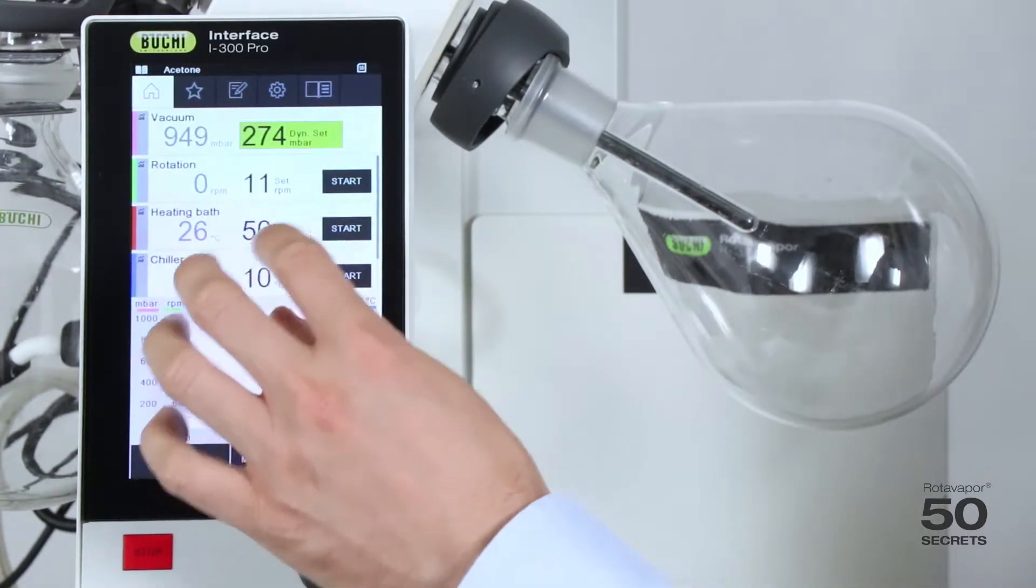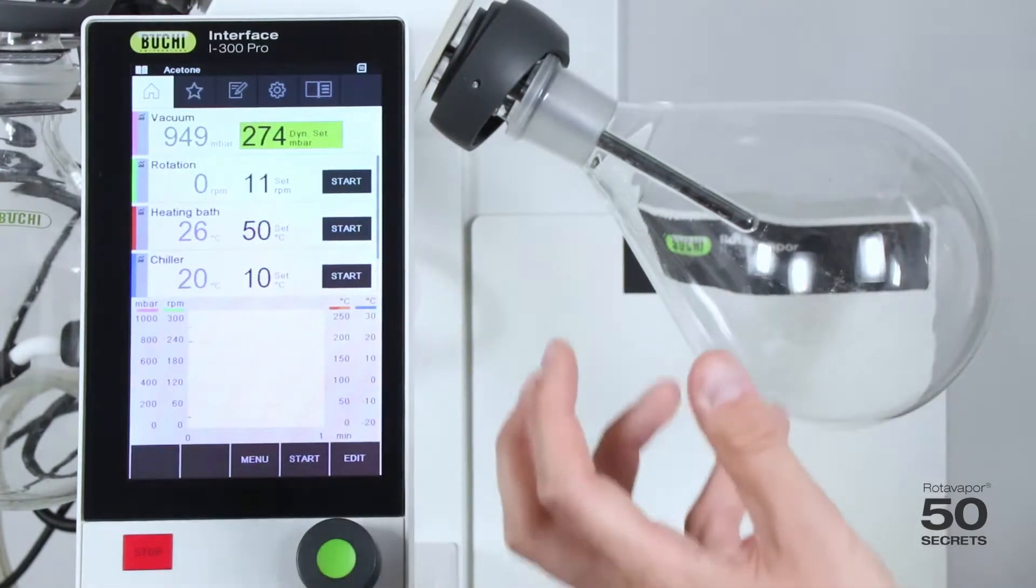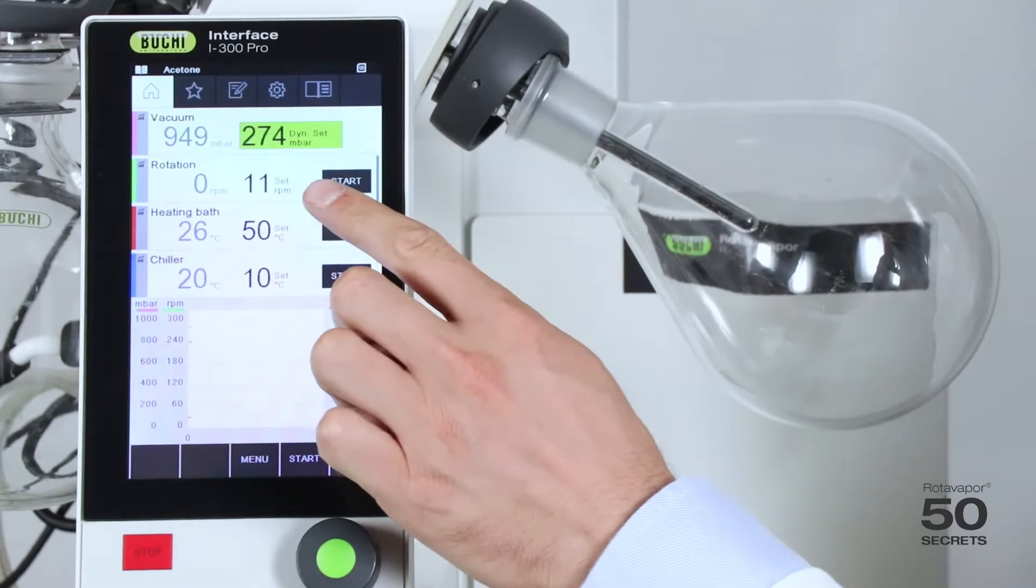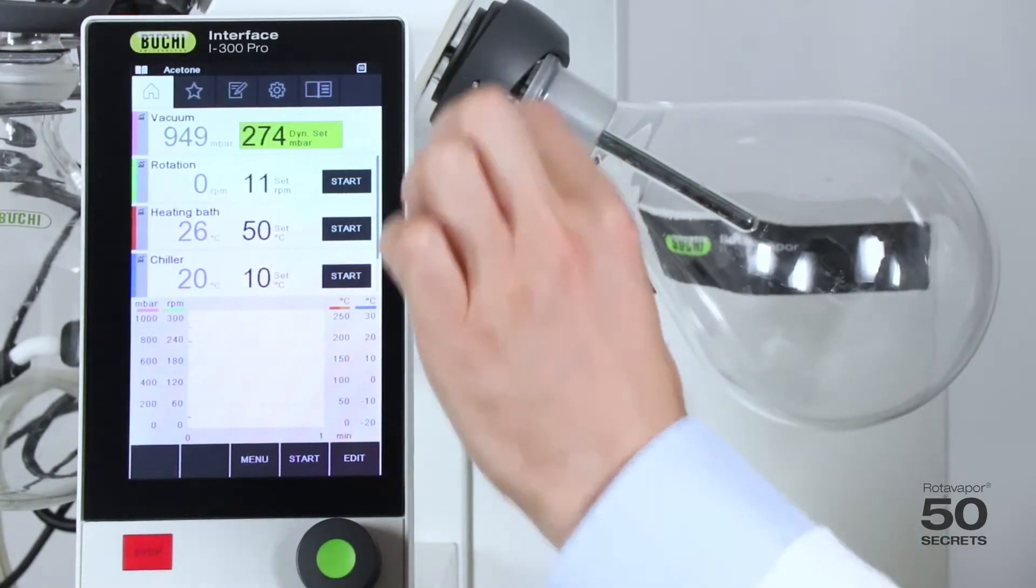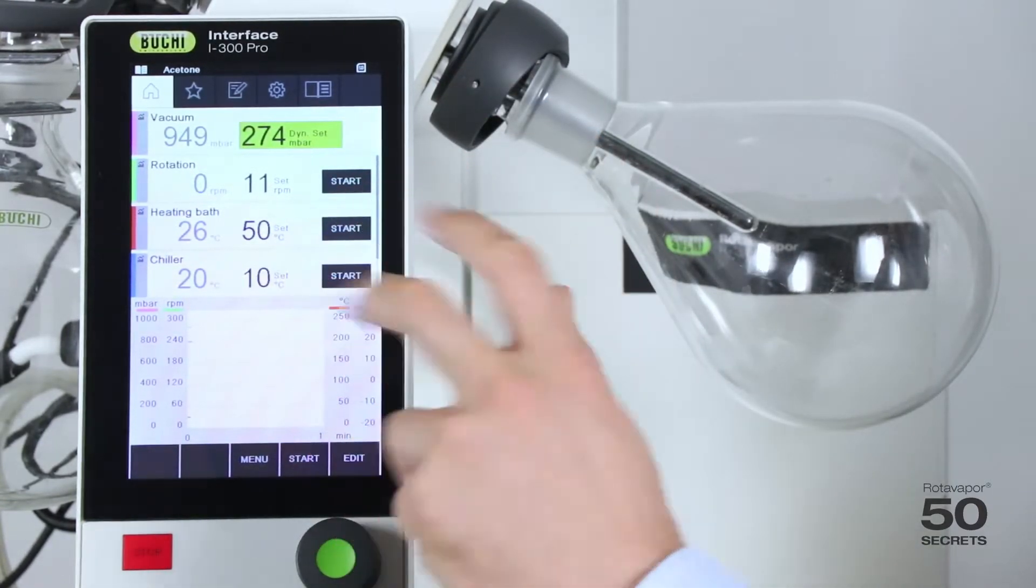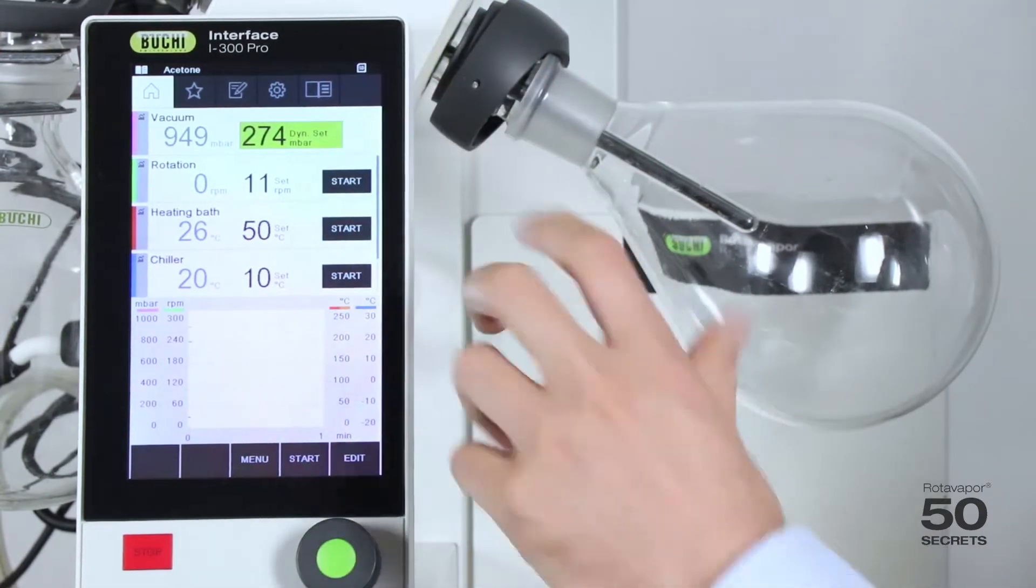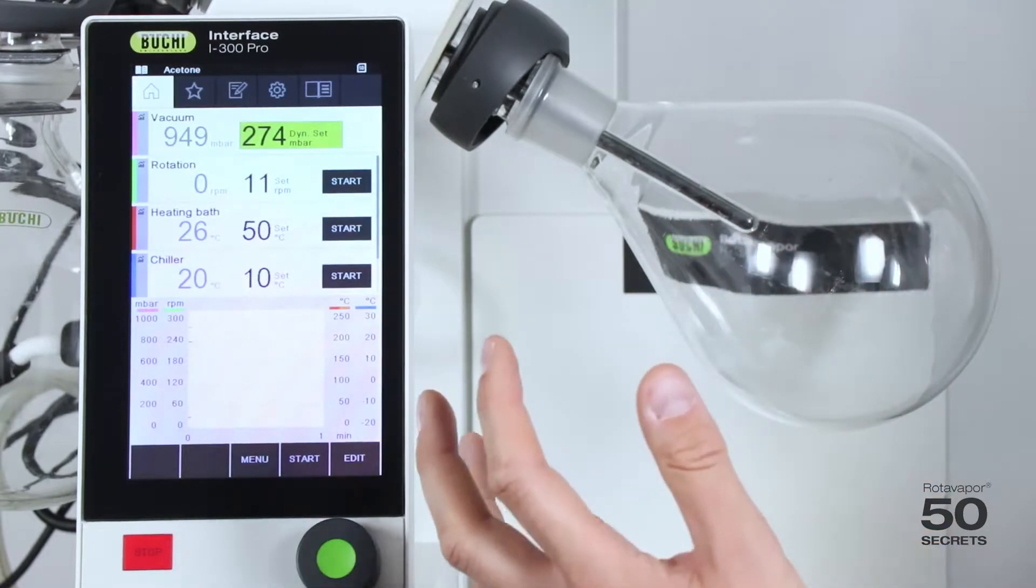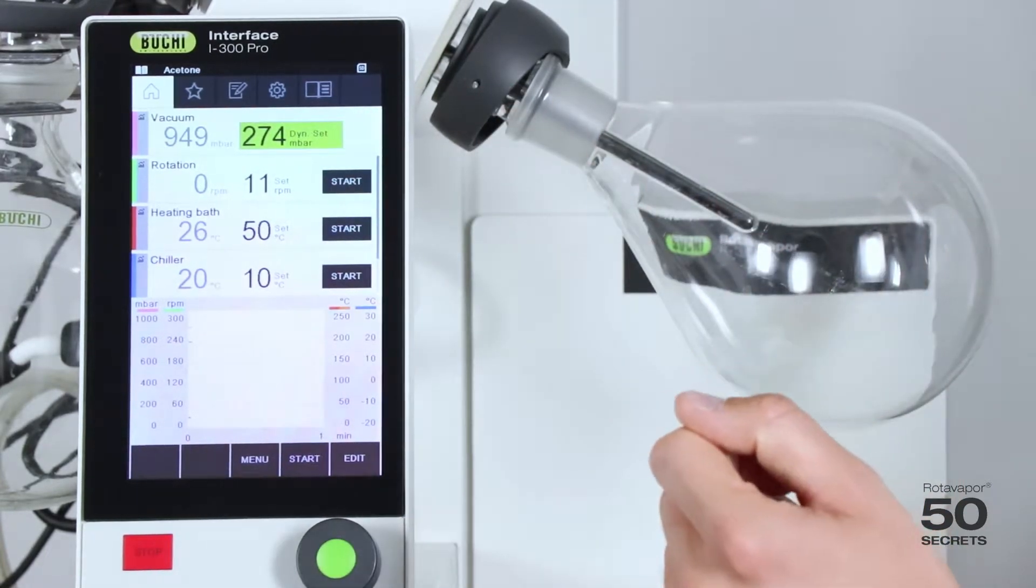So if I press start now what will happen is that the distillation will actually try to start, and it will adjust this vacuum to the middle one. So the delta T is the same below and above the boiling point. That means immediate start by using the solvent library.